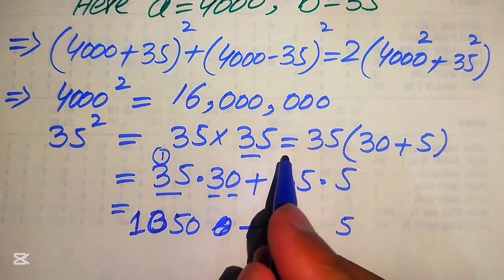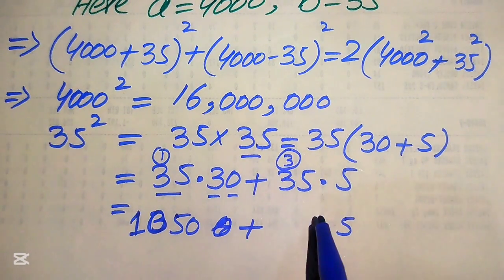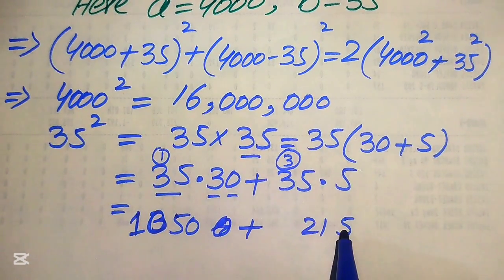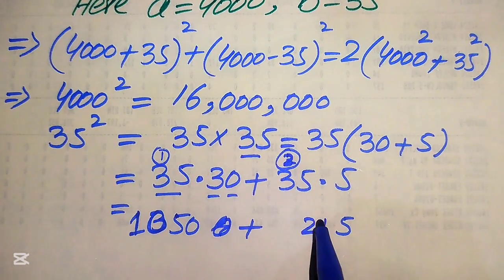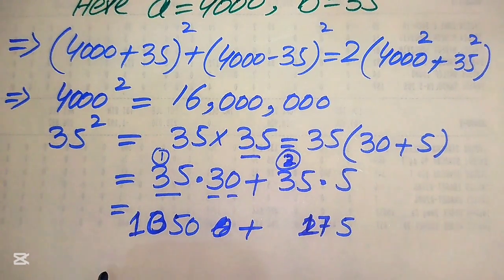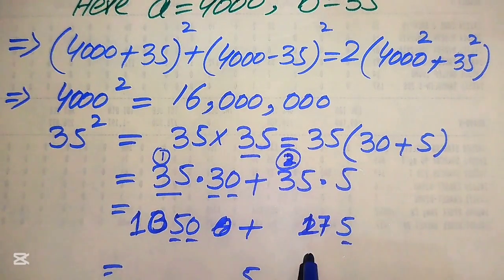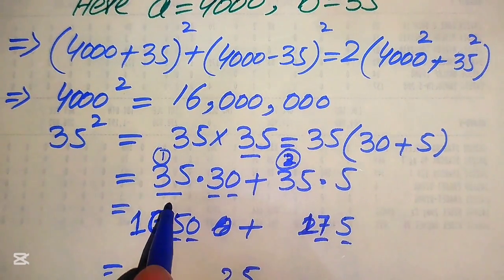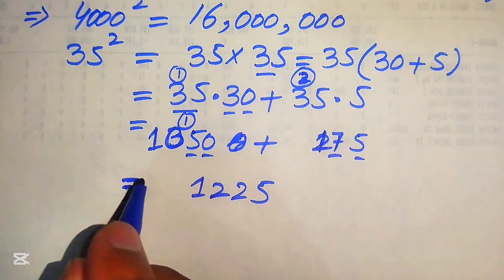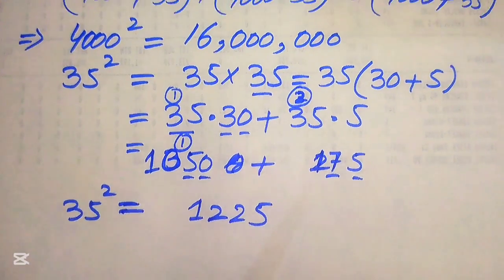For 35 × 5: 5 × 5 = 25, write 5 carry 2; 5 × 3 = 15, plus 2 = 17 — wait, correcting: we get 175. Now summing 1050 and 175: 0 + 5 = 5, 5 + 7 = 12 write 2 carry 1, 0 + 1 + 1 = 2, and 1 remains. So 35² = 1225.